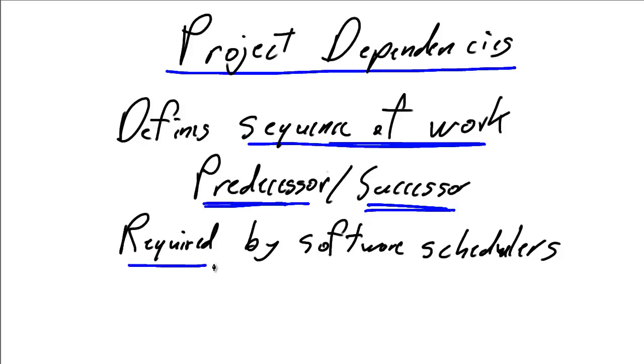But because in today's day and age we're using software to do all of our project scheduling, we absolutely have to define all of the dependencies because the software scheduler doesn't have the common sense that we human beings have. Therefore, we as project managers need to spend a fair amount of work up front defining all of the project dependencies so that our software is going to work successfully.